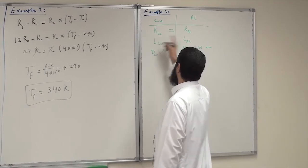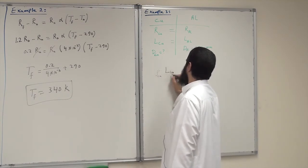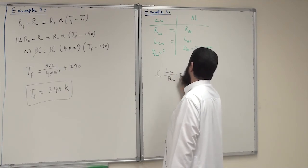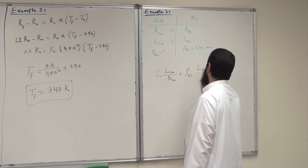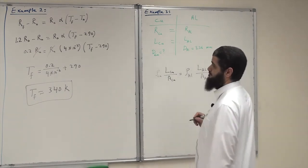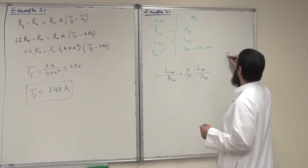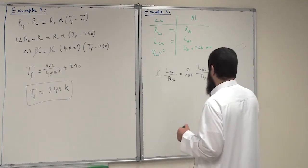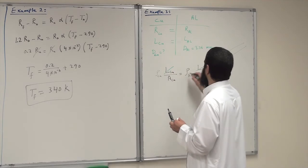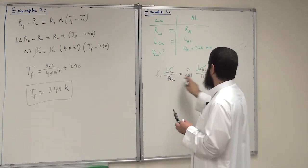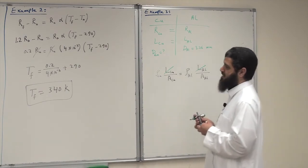Starting from R_copper equals R_aluminum: rho_copper times L_copper divided by A_copper equals rho_aluminum times L_aluminum divided by A_aluminum. Since lengths are equal, they cancel. The wires are cylindrical, so the cross-sectional area is the area of a circle, A = π r² = π (d/2)².